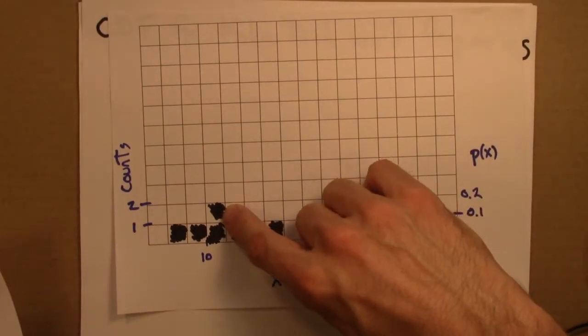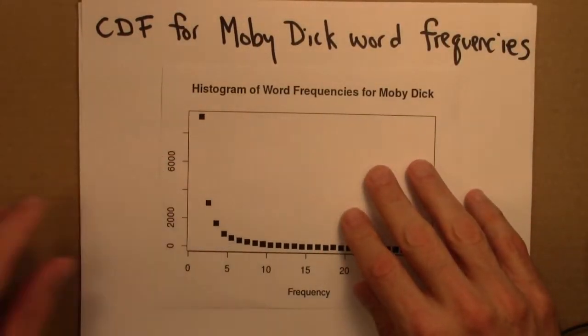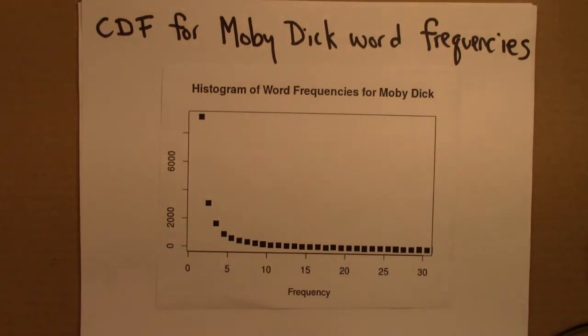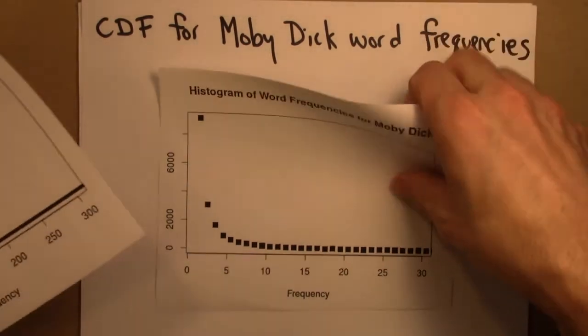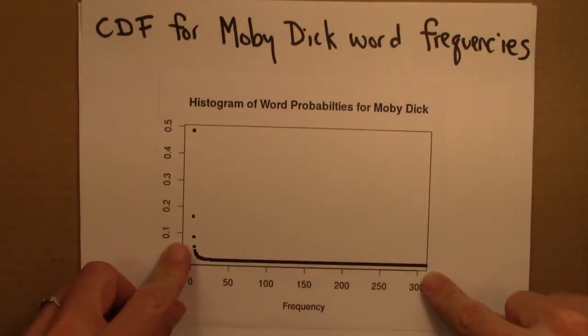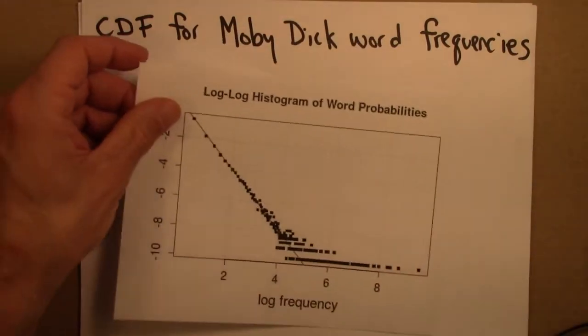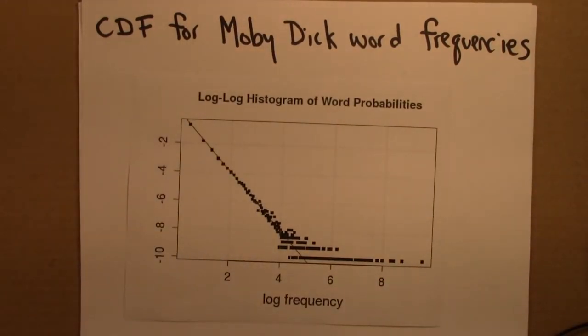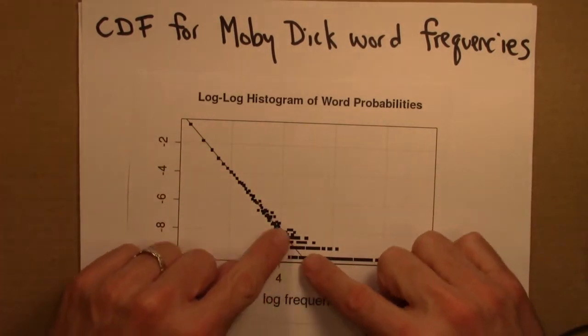And here the counts only went up to two, here they go up much higher. And so you'll also recall that this histogram, you can plot it out much farther, out to 300, 400, 500, it keeps going. And we can make a log-log plot of this, and we saw linear behavior over a pretty wide range.